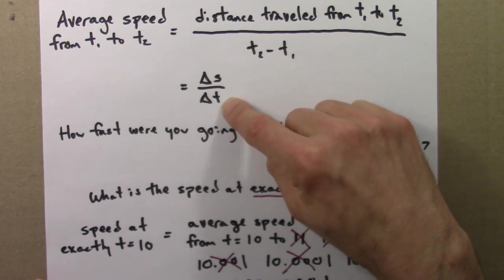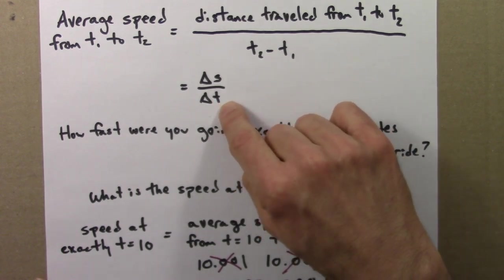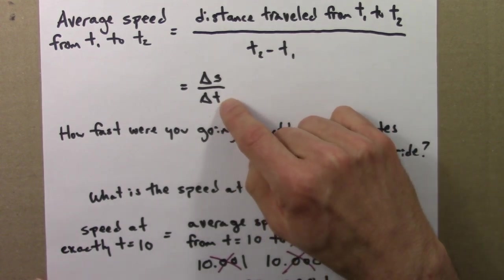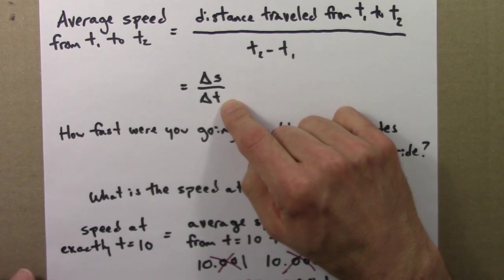And so we just sneak up on dividing by 0. We let our delta t get smaller and smaller and smaller, so we get closer and closer to dividing by 0.